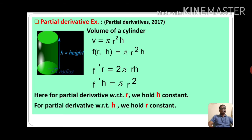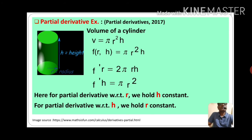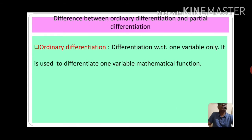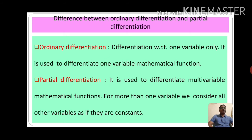Here we have seen that for the partial derivative with respect to r, we hold h constant, and for the partial derivative with respect to h, we hold r constant. Now, the difference between ordinary differentiation and partial differentiation: ordinary differentiation is differentiation with respect to one variable only, used for one-variable mathematical functions. Partial differentiation is used for multivariable mathematical functions — for more than one variable, we consider all other variables as constants.